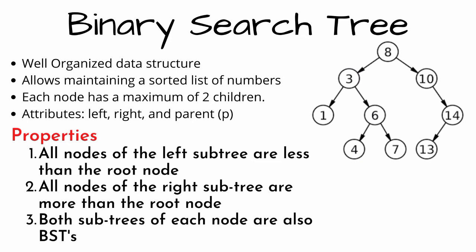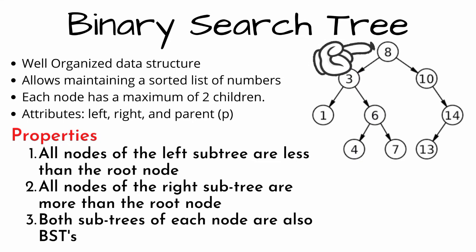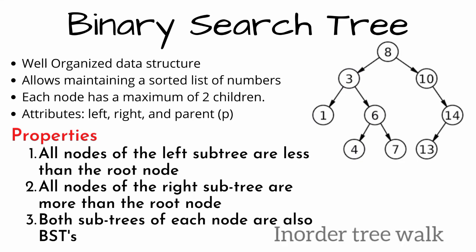In this figure you can see that 8 is the root node. The values which are less than 8 are in the left subtree, and the values which are greater than 8 are in the right subtree. The third property is that both subtrees of each node are also a BST.